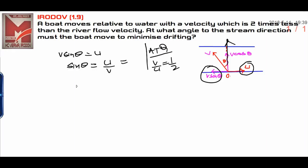If I write by this way, v upon u is equal to 1 upon 2, then this will be 1 upon 2, and θ I can write as 30 degrees.